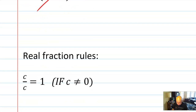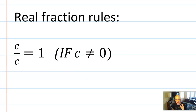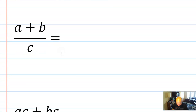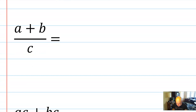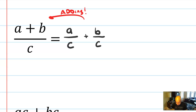Let's go over the real fraction rules. The first is c over c divides and makes 1, as long as that number is not zero. For addition: if you have a plus b over c, the only thing you can do is split it into a over c plus b over c. That is perfectly legal — it's basically reverse addition. You can reverse add fractions by splitting them into two.